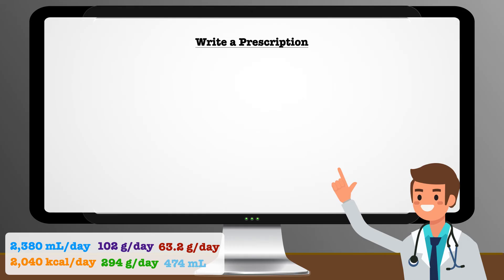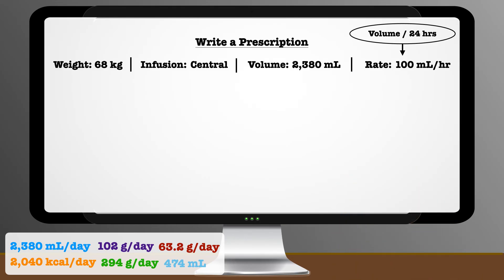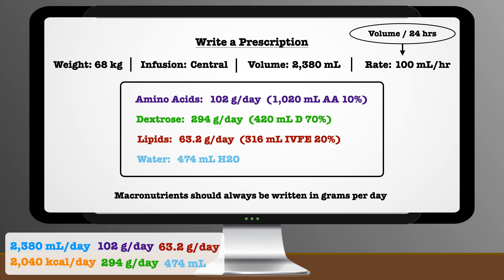Finally, we are ready to write a prescription. Important items to document are the dosing weight, the site of infusion (whether peripheral or central), the total volume, and the infusion rate, which is the total volume divided by 24 hours when it is continuous. As a best practice, macronutrients should always be written in grams per day to avoid confusion or error in case the stock solutions or fat emulsion change. For example, 420 milliliters of a 50% dextrose solution provides a much different energy load than 420 milliliters of a 70% solution, but 294 grams per day is always 294 grams per day.